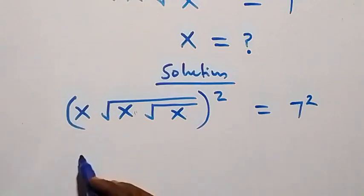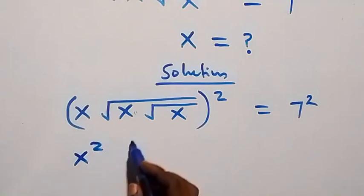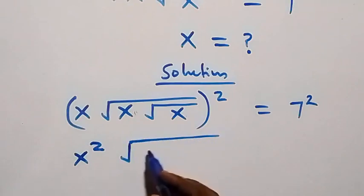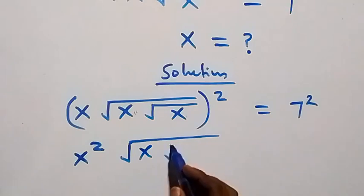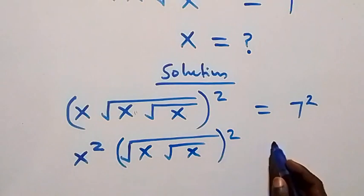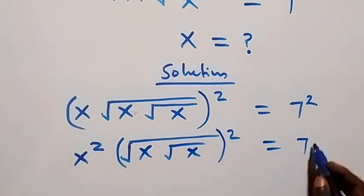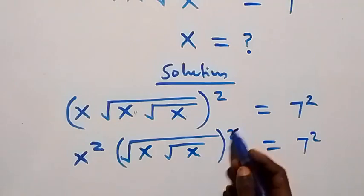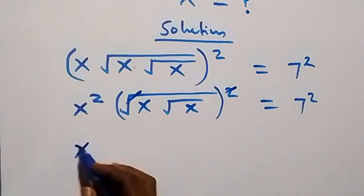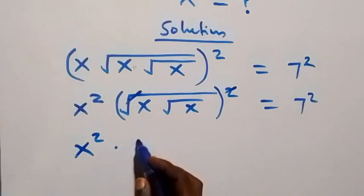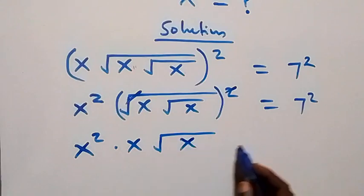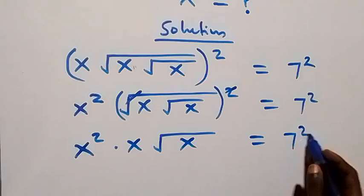This square will affect x — we have x squared — then it will affect this square root here. So we have square root of x, then root x squared from here, equals to seven squared. And here the square cancels the square roots. Then what we have is x squared times x, then square root of x equals to seven squared.